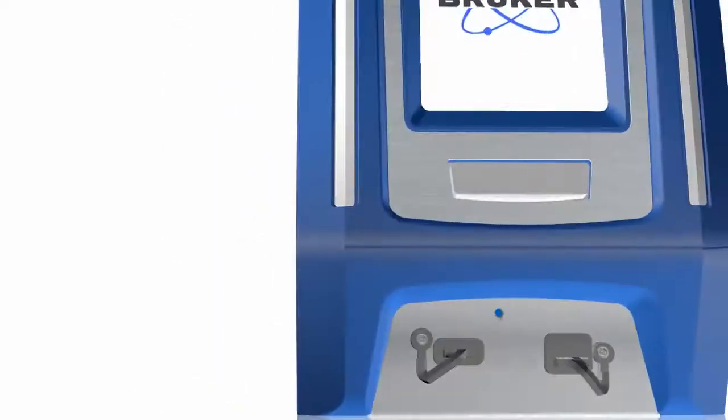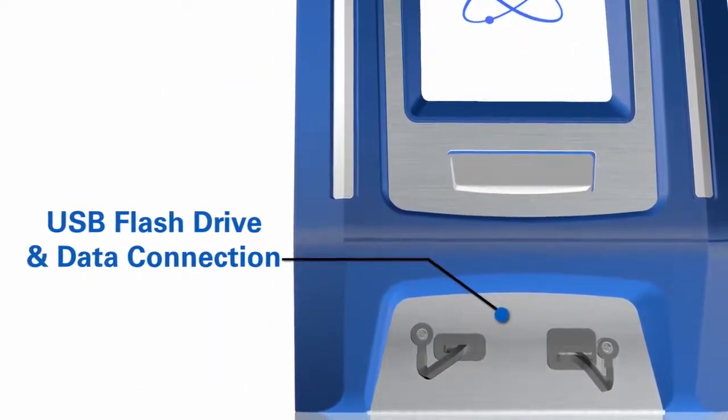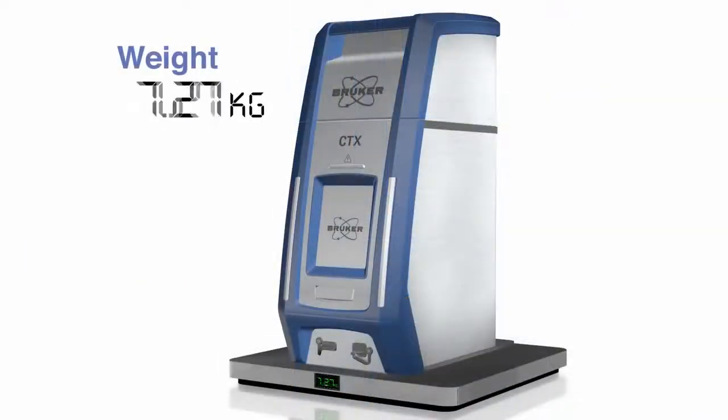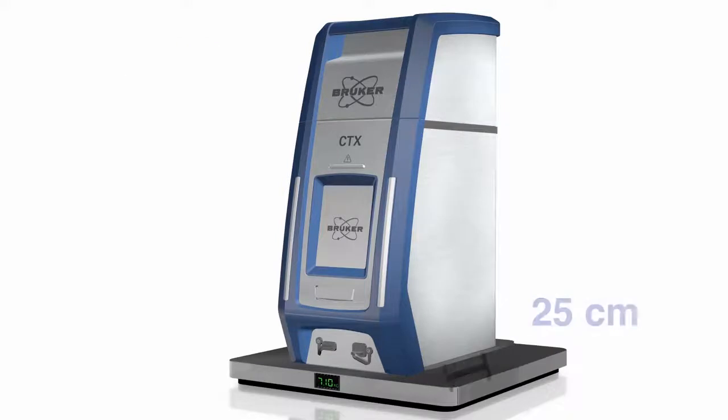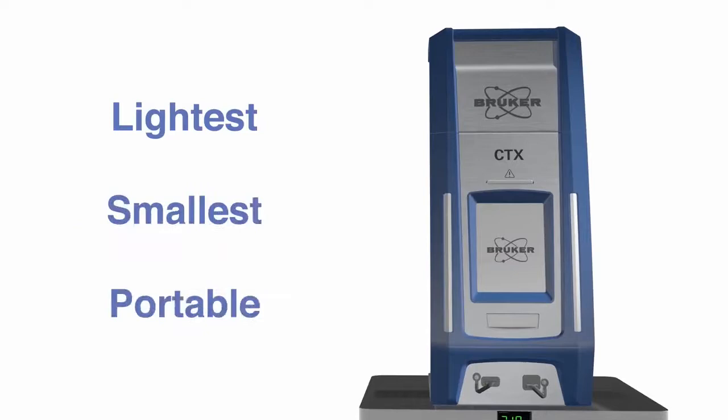The USB connection for flash drive or data connection is conveniently located at the front. At less than 7.1 kilograms in weight and 35 centimeters in height, the new CTX is the lightest and smallest double safety interlocked portable XRF available.